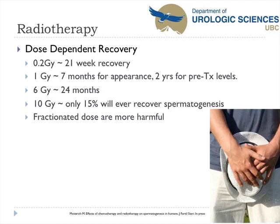Radiotherapy is dose-dependent. At 0.2 Gray, it takes approximately 21 weeks to recover. At 1 Gray, it becomes 7 months for sperm to appear and up to 2 years to reach pre-treatment levels. With direct radiation to the testes at 10 Gray, only 15% of individuals will ever recover any level of spermatogenesis. Notably, fractionated doses are more toxic to these cells than the same total dose delivered at once.